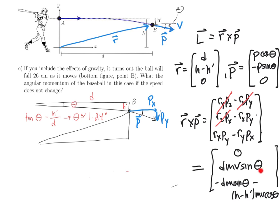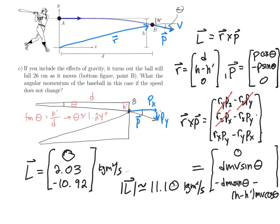But if I start plugging in numbers for these things, I get the following: 2.03 kg·m²/s in the Y direction, and negative 10.92 kg·m²/s. So this has changed a little bit, and this is now not zero. And I asked for the angular momentum, so I'm just going to find the magnitude of this thing. And I get 11.10 kg·m²/s.